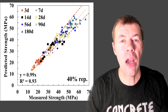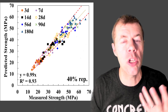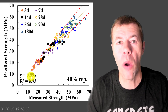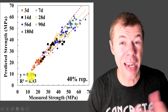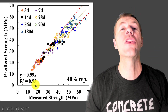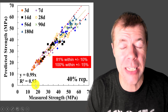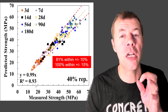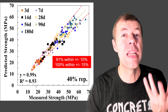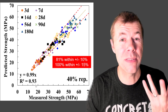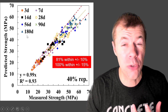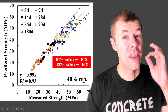95% of the data is predicted accurately within plus or minus 10%. Let's move on to 40% — a little bit higher replacement level, a little bit tougher to get right. But as you can see, we're still at y equals 0.99x. Pretty good. R-squared value of 0.93. 81% is within plus or minus 10%, and 100% is within plus or minus 15%. That means we're going to be within 10%, 80% of the time, for 40% replacement at three days all the way up to 180 days.